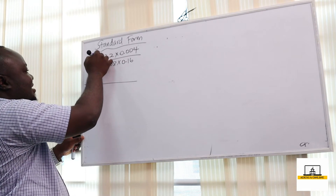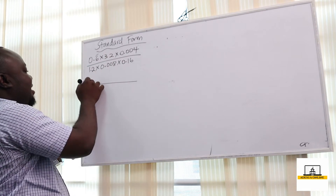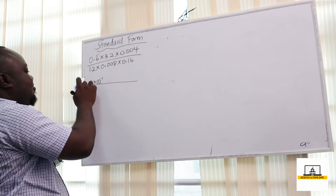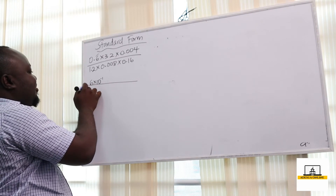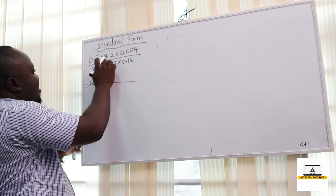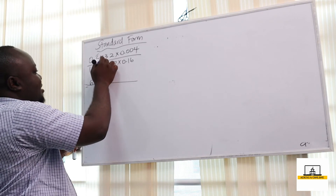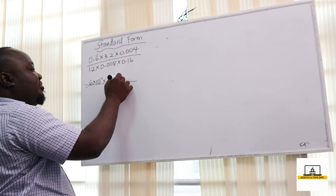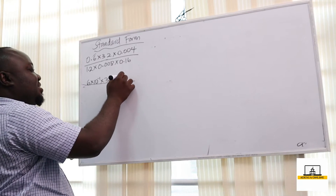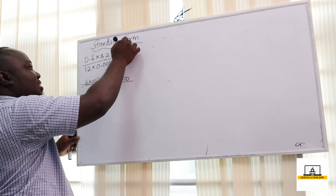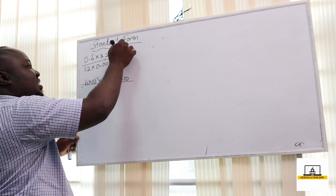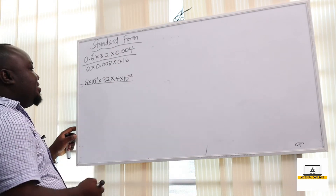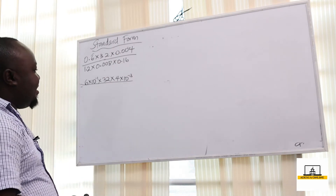For the numerator, I move this one step so it becomes 6 times 10 raised to the power negative 1. This next one is already a whole number so we leave it as 32. Then we have 4 — moving it 1, 2, 3 steps to the right — so it becomes 4 times 10 raised to the power negative 3.